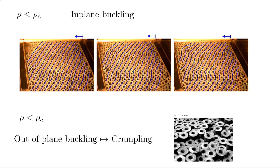If the density rho is less than a critical rho-c, inside a shear cell that I'm banging, you can draw lines and as soon as you bang, you get non-affine deformations - these are shear-banding zones. These are the mechanical instabilities I was talking about.